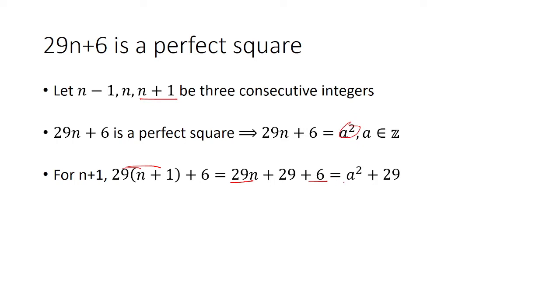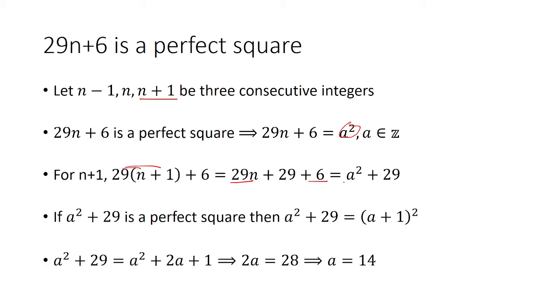If a² + 29 is a perfect square, that means it equals (a+1)². Expanding (a+1)², we get a² + 2a + 1. The a² terms cancel. Subtracting 1 from both sides, we get 2a = 28, so a = 14.